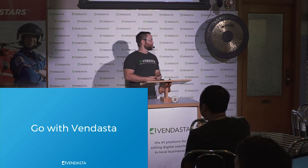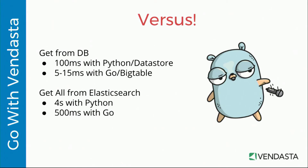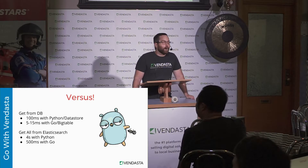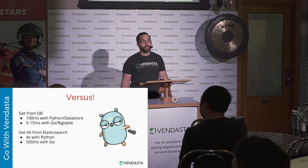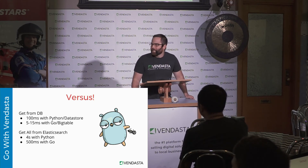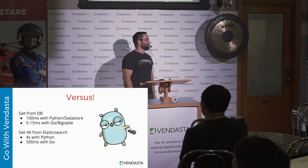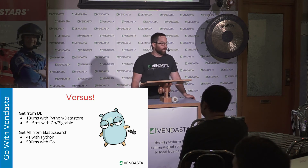Let's talk about Vendasta. What are some of the performance advantages we've seen since switching to Go? For a database get using Python and the Google App Engine datastore, we were seeing 100 milliseconds for a particular entity. Switching to Go, that dropped to 5 to 15 milliseconds. That has other factors at play — moving out of App Engine and directly accessing Bigtable — but it's a significant increase. Further, for a get-all from Elasticsearch, we were seeing four seconds to retrieve all entities using Python. Switching to Go, that dropped to 500 milliseconds, which is a huge difference when you're waiting for a webpage to load.